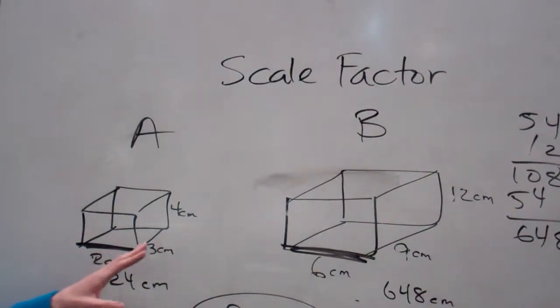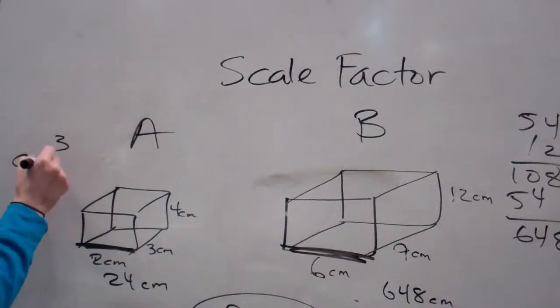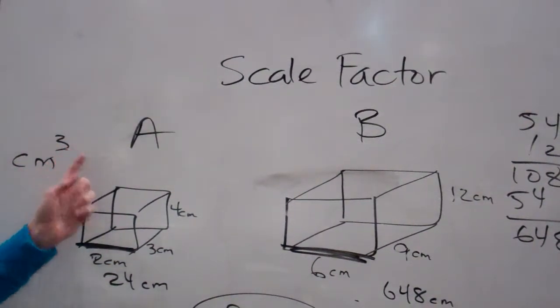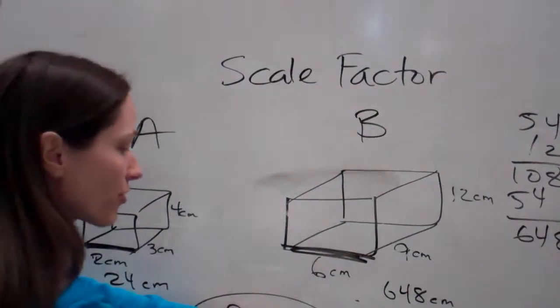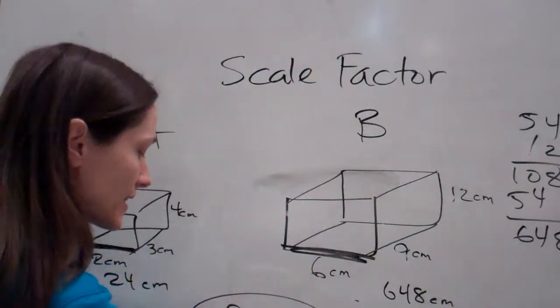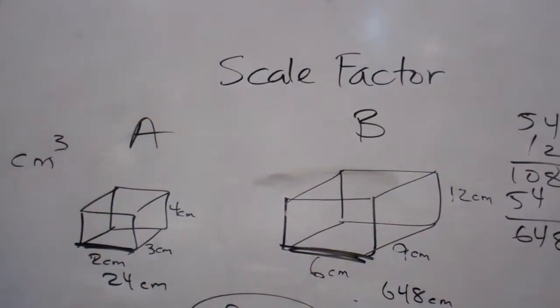And volume, what do I always tell you about volume? You do cubed, right? So, guess what we're going to do the scale factor. Cubed. Three times three times three. Which is? 27. We're doing cubed. So, I take my scale factor and I do it three times. Three times three times three to get my volume scale factor.